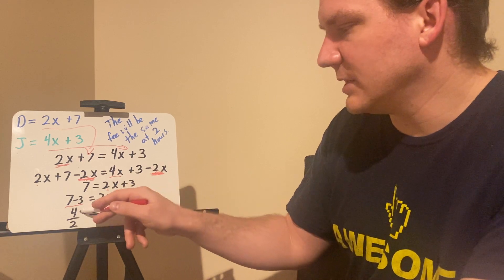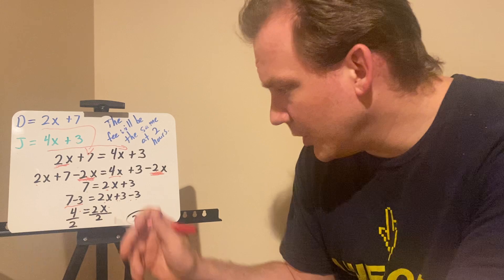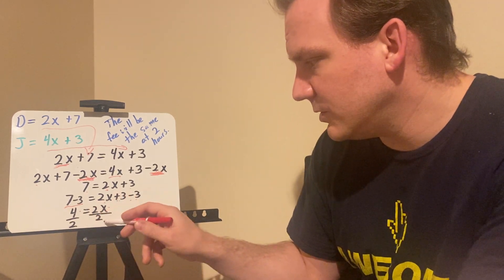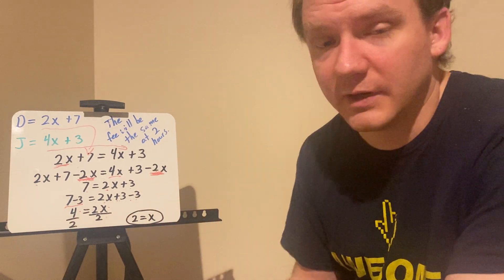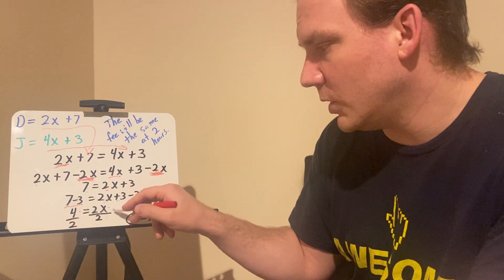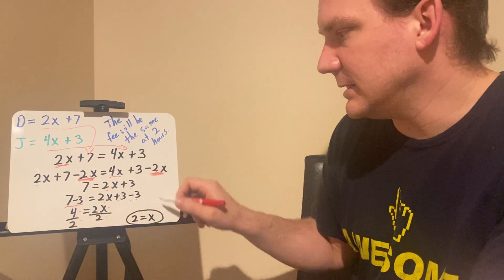I'm left with 2x equals 4. Now I can use the inverse operation of multiplying, so I can divide. I divide both sides by 2. 2x divided by 2 is going to equal 1x. Two divided by two is one, so I get down to 1x. Four divided by two equals two. So I know that x equals 2.